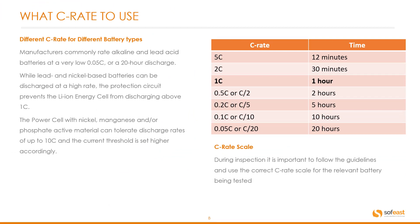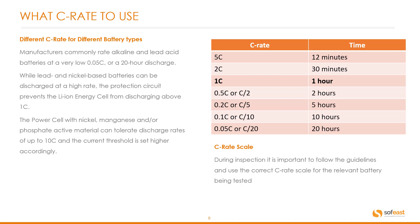So what C-rate should be used? Different C-rates for different battery types. Manufacturers commonly rate alkaline and lead acid batteries at a very low 0.05C or a 20-hour discharge, while nickel-based batteries can be discharged at a higher rate. The protection circuit prevents the lithium-ion energy cell from discharging above 1C. The power cell with nickel, magnesium and/or phosphate active material can tolerate discharge rates up to 10C, and the current threshold is set higher accordingly. So during inspection it is important to follow the guidelines and use the correct C-rate scale for the relevant battery being tested.